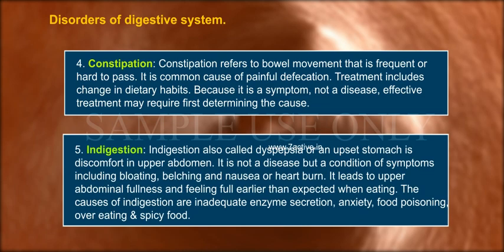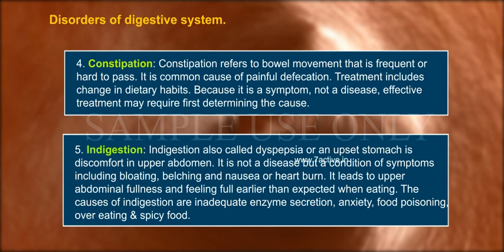5. Indigestion: Also called dyspepsia or an upset stomach, it is discomfort in the upper abdomen. It is not a disease but a condition with symptoms including bloating, belching, nausea, or heartburn. It leads to upper abdominal fullness and feeling full earlier than expected when eating. The causes of indigestion include inadequate enzyme secretion, anxiety, food poisoning, overeating, and spicy food.